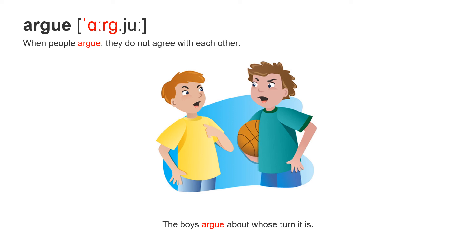The first one: argue. It has two syllables, accent on the first syllable — argue. When people argue, they do not agree with each other. The boys argue about whose turn it is. Argue.